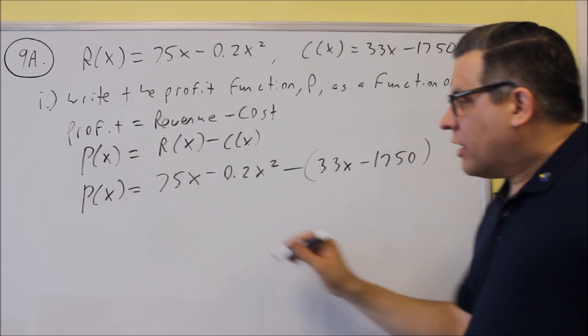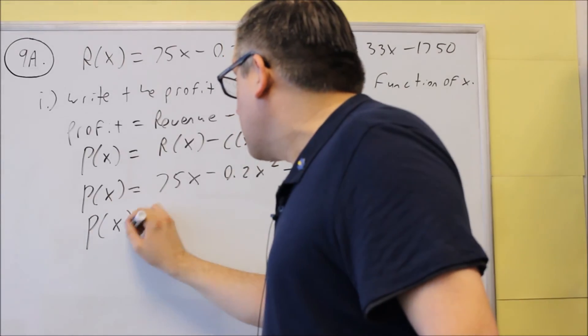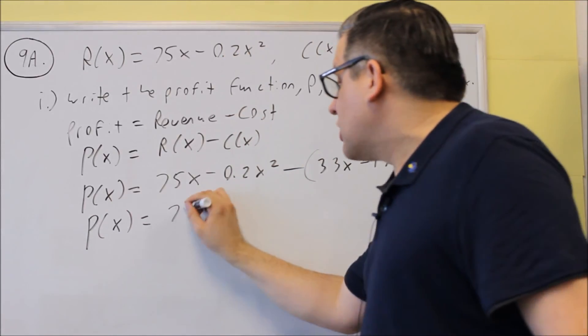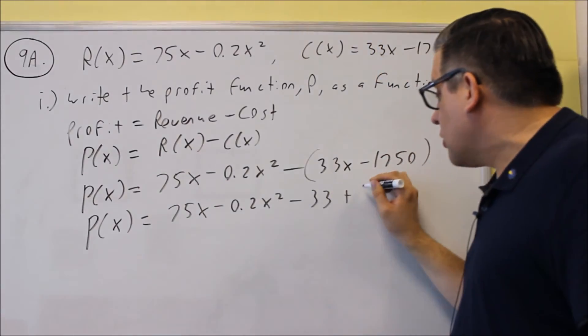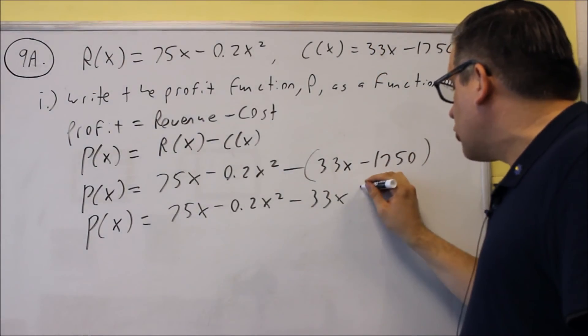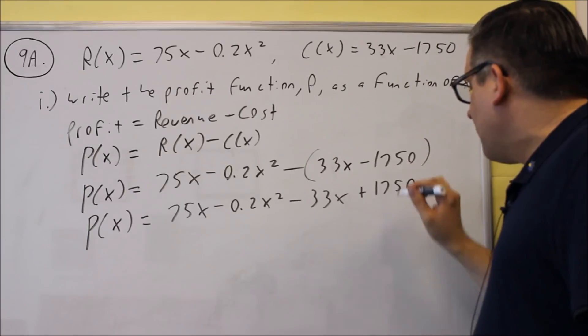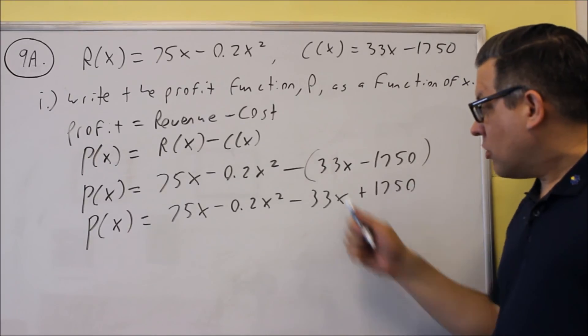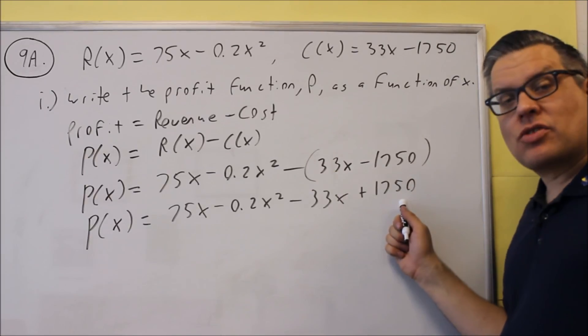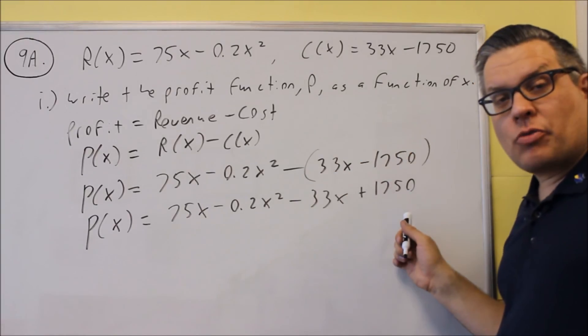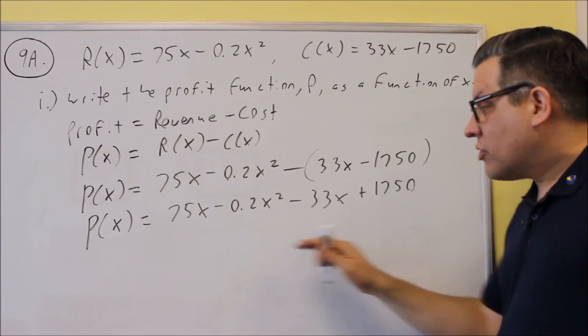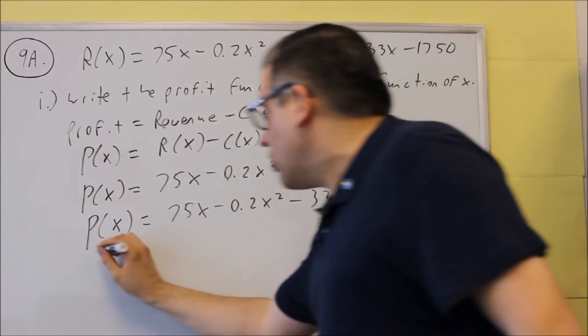So I'm going to do 75x minus 0.2x² minus the cost. But make sure that I first distribute the negative sign to each one, so I get this change in sign. That's why it's important to put parentheses around it—because it reminds you to multiply through with the negatives. Now by doing that, we can add the like terms.